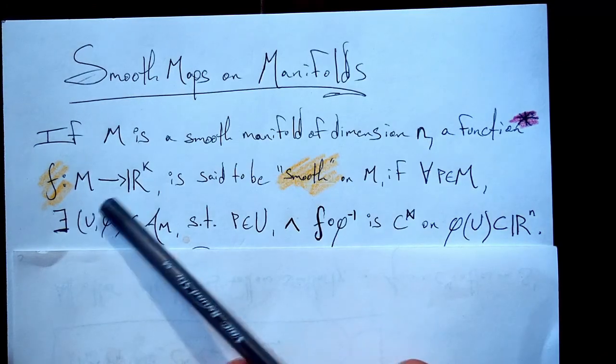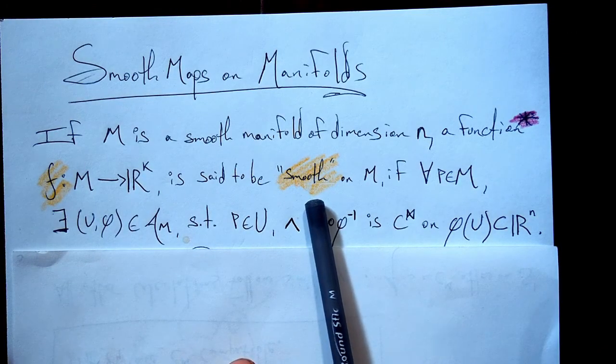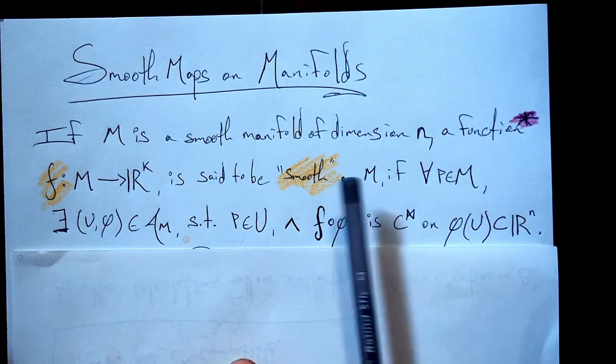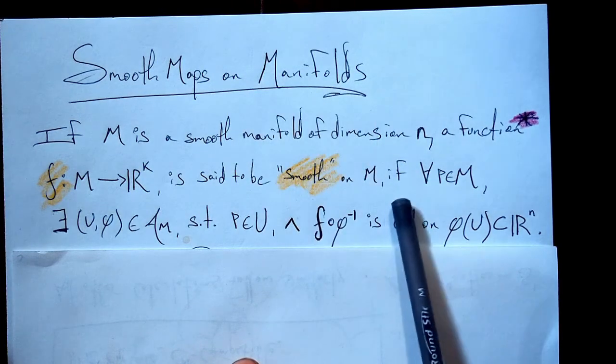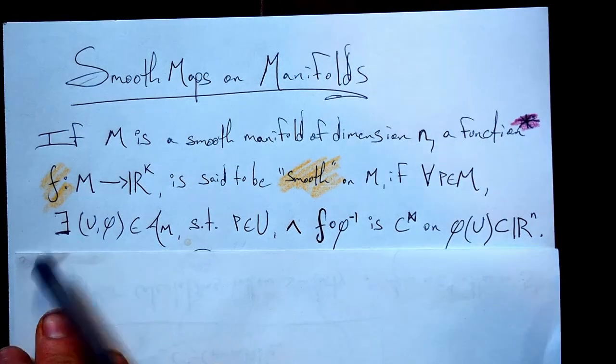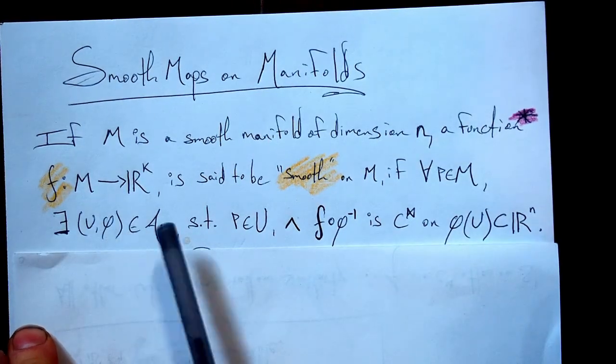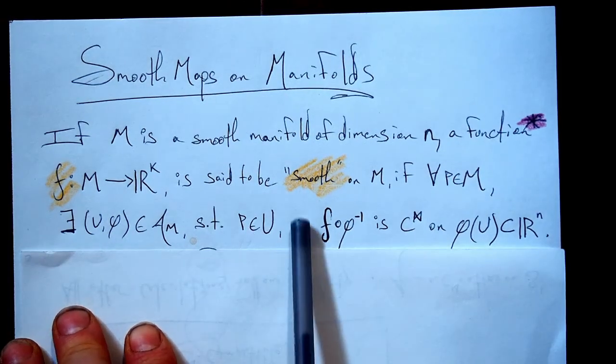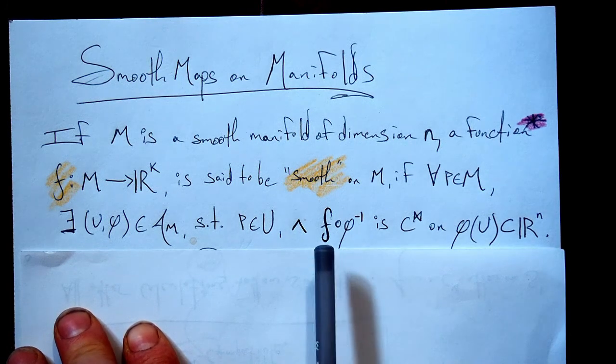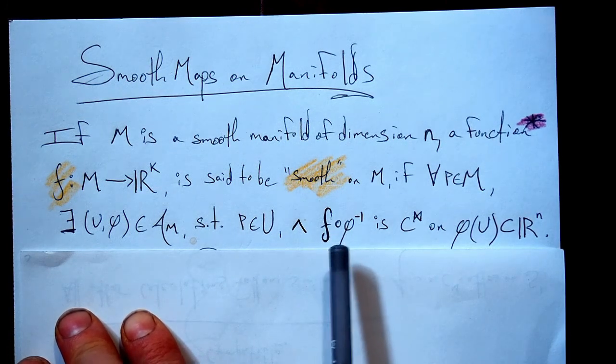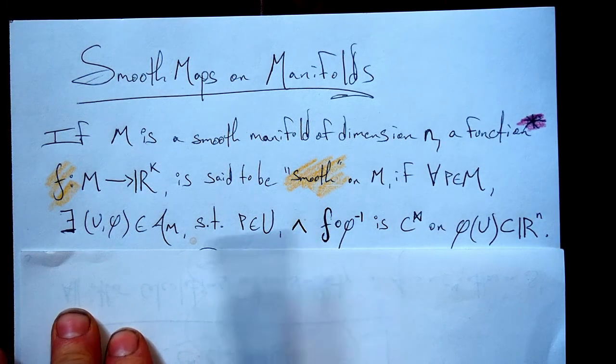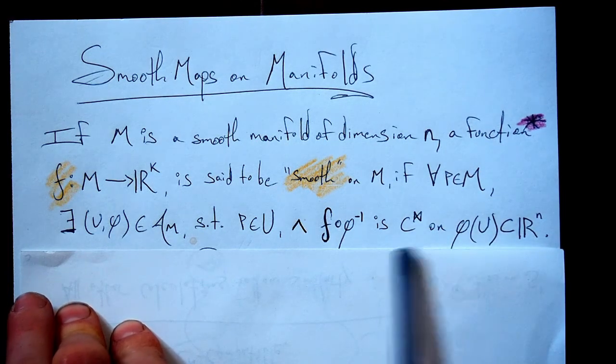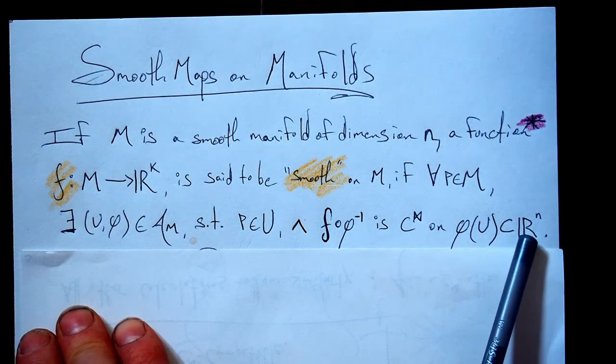So coming back here, we have our function and we call it smooth on our manifold. It takes in points in our manifold. That's what I mean by on the manifold here. If for all points in our manifold, there exists a chart in our atlas such that our point is in the open set and our function precomposed with φ^(-1), this guy's inverse is smooth on its domain, which is going to be φ(U). And note that that lives in ℝ^n.